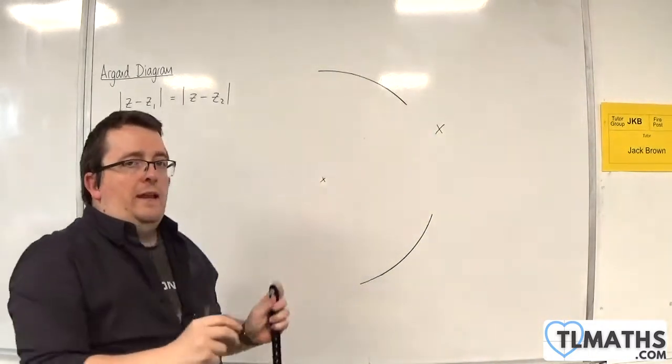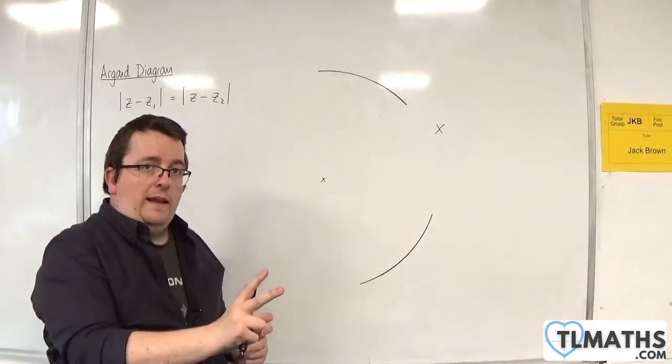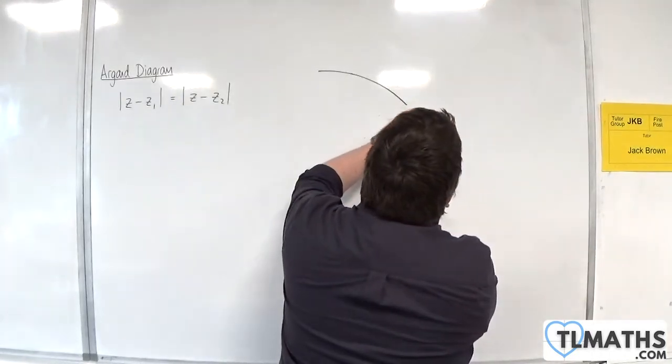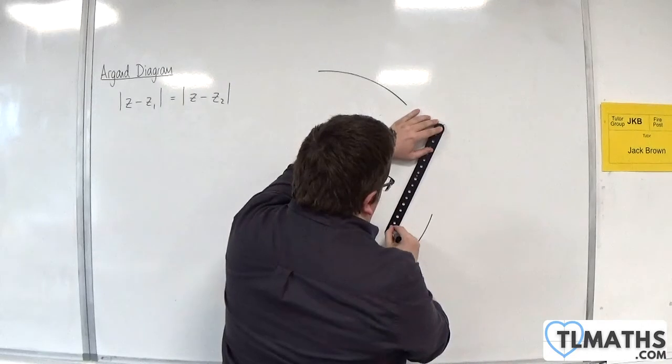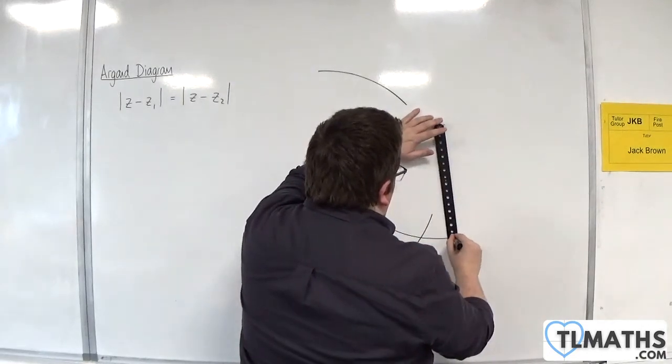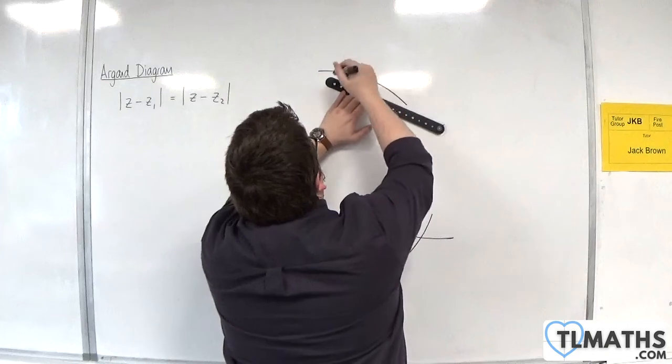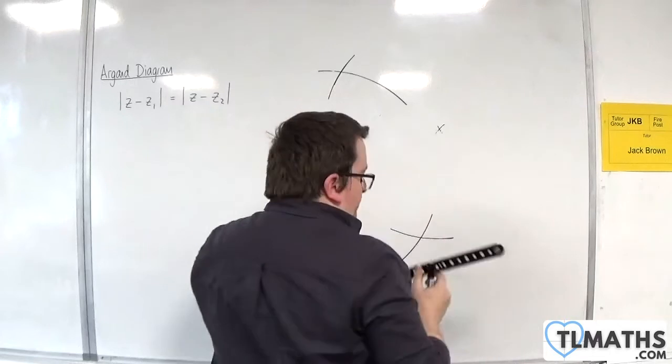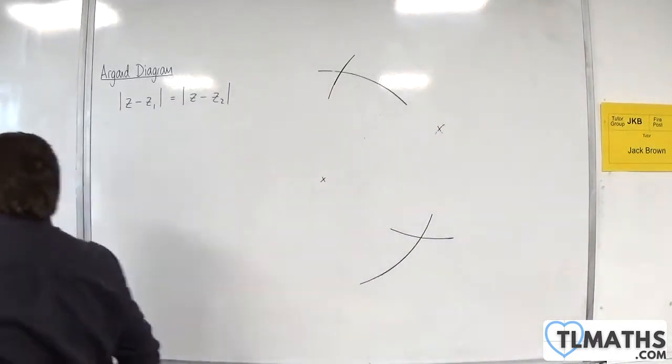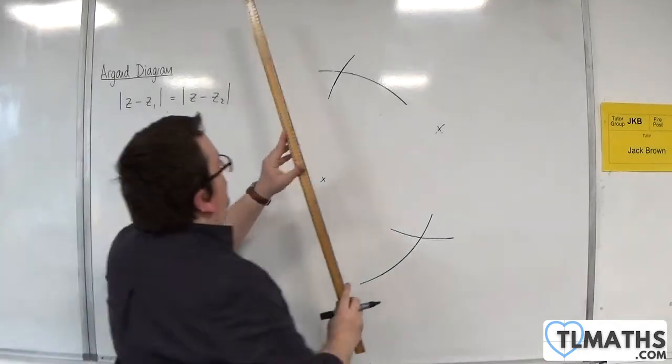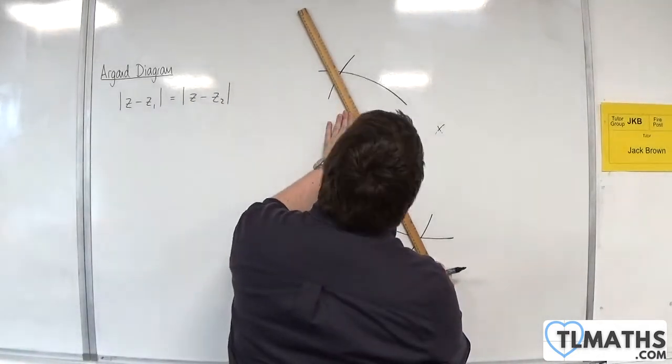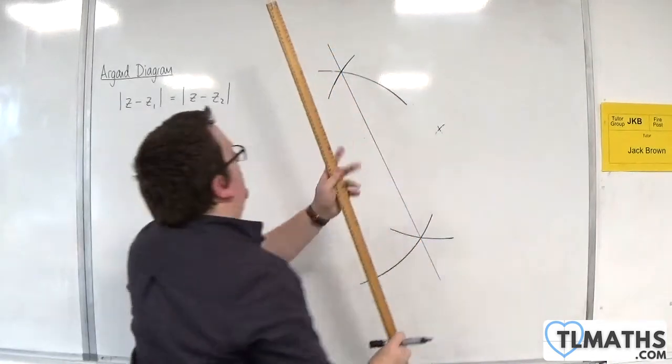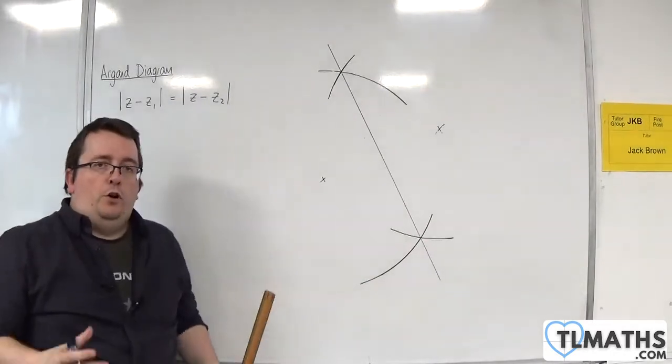What's important is that you keep your compasses at the same length here, so I don't change the radius of the circle. I'm going to make an arc there and bring it back up here and make another arc. Where those two cross, I am going to draw a line, and that is the perpendicular bisector of those two points.